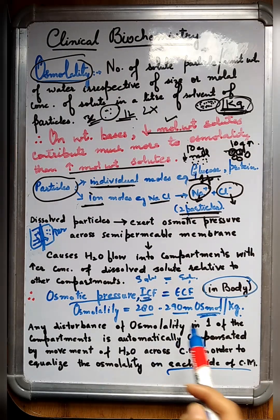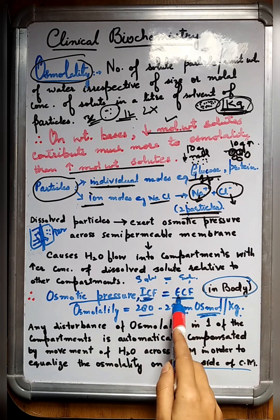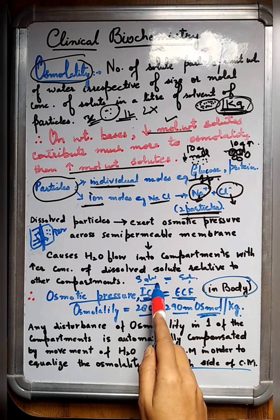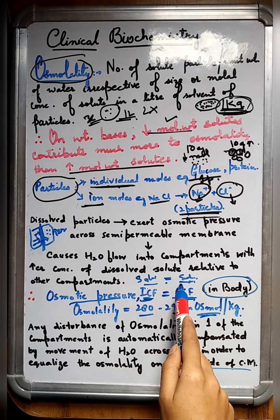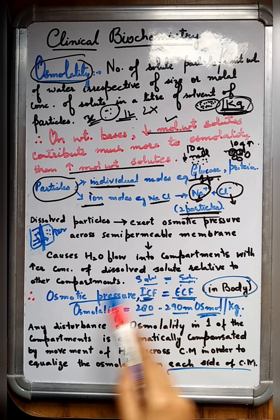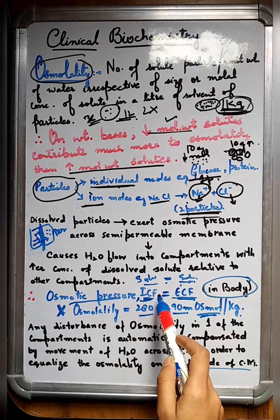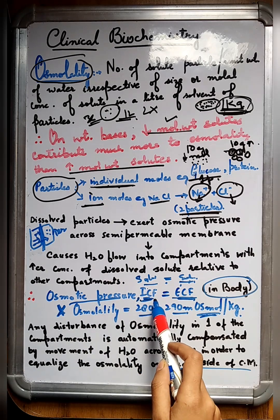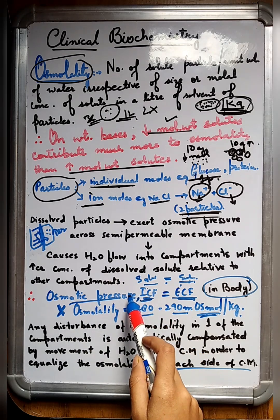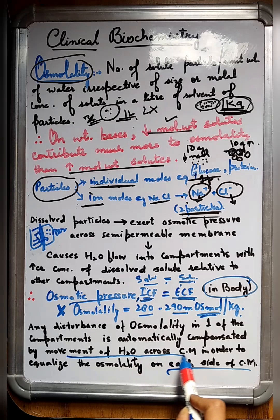When the osmotic pressure across ICF and ECF is the same, that means solute concentration is the same on both sides as well as the water concentration. So no movement of water occurs because the osmotic pressure is equal. Only when a disturbance occurs in this osmotic pressure can there be movement of water across the semi-permeable membrane.